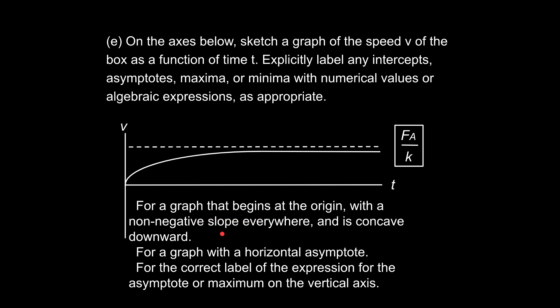The graph starts at the origin, has non-negative slope everywhere, is concave down, and approaches a horizontal asymptote at F_A over k — the terminal velocity we solved for earlier. Label that asymptote, because the rubric gives one point for the correct shape, one for the horizontal asymptote, and one for the correct label. Importantly, the AP does not double-ding you: if you got the terminal velocity wrong earlier but use that same answer here consistently, you still earn the point. Hopefully this increases your confidence for AP Physics C Mechanics FRQs.